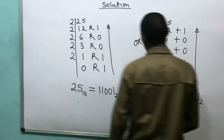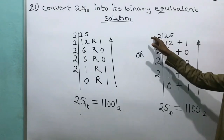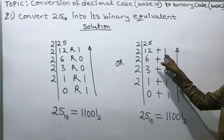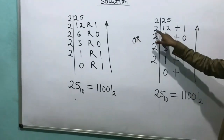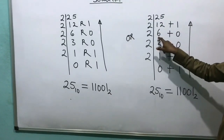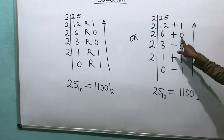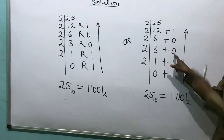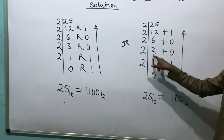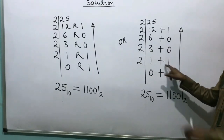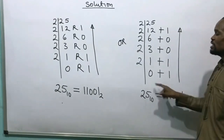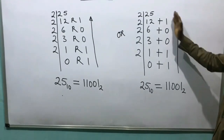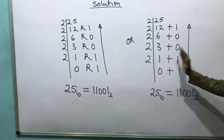Alternatively, we can use this method: 2 divided by 25 gives 12 remainder 1, written as 12 plus 1. Then 2 divided by 12 gives 6 plus 0 (remainder 0). 2 divided by 6 gives 3 plus 0. 2 divided by 3 gives 1 remainder 1, written as plus 1. Then 2 divided by 1 gives 0 remainder 1, written as 0 plus 1.